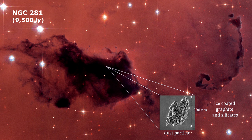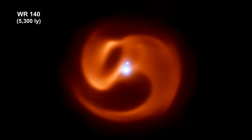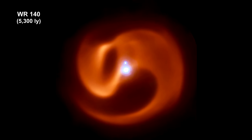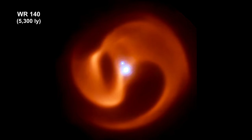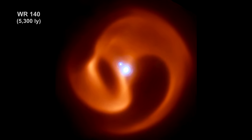One of astronomy's mysteries is where did galactic dust come from? To find out, Webb will be studying dust-producing Wolf-Rayet binary stars like this one, WR 140, 5,300 light-years away.